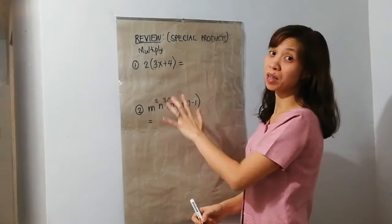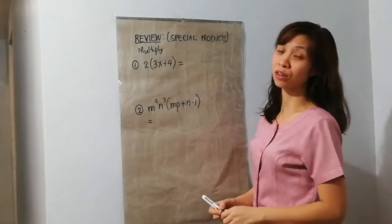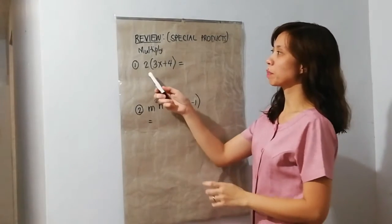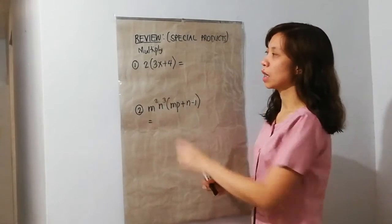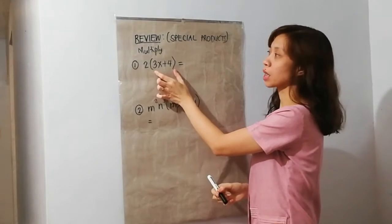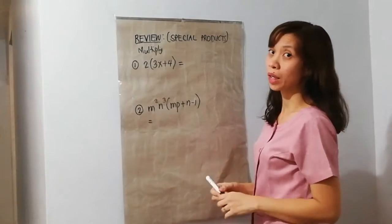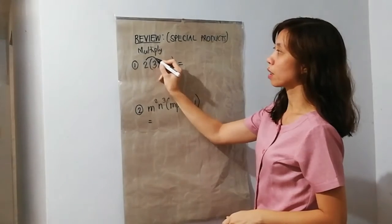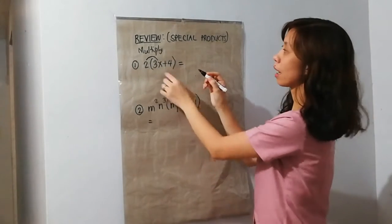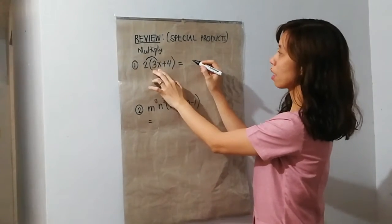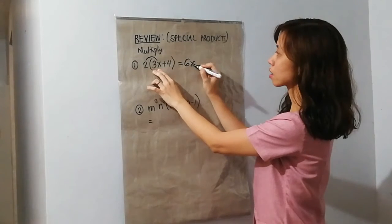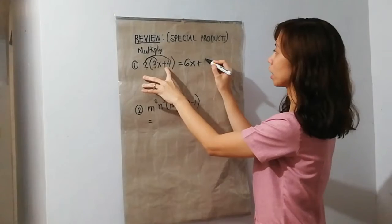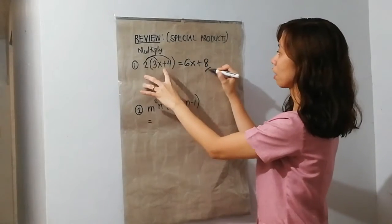Now, review naman tayo about special products na diniscuss ninyo noong grade 7 kayo. So, we have to multiply these polynomials. 2 times the quantity of 3x plus 4. So, distributive property — didistribute natin yung 2 sa 3x and 4. So, 2 times 3x is 6x. This is plus 2 times 4 is 8. This is the product.